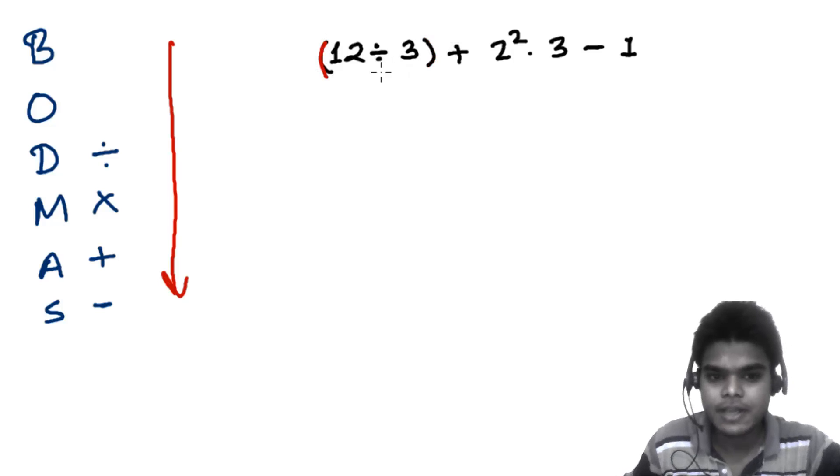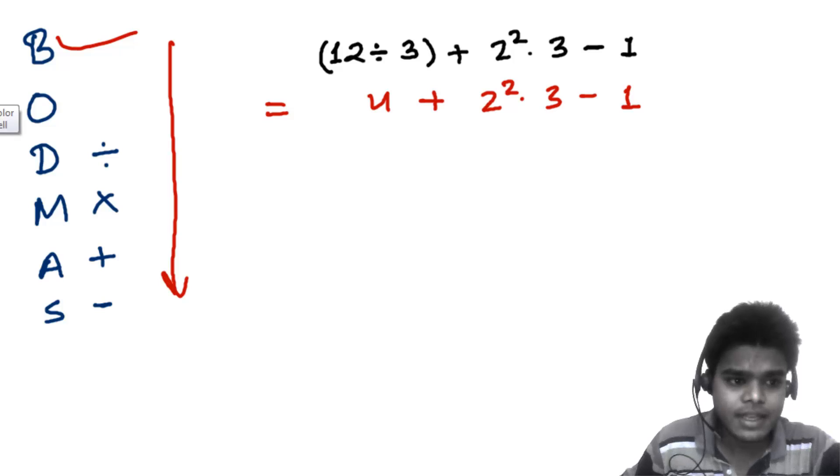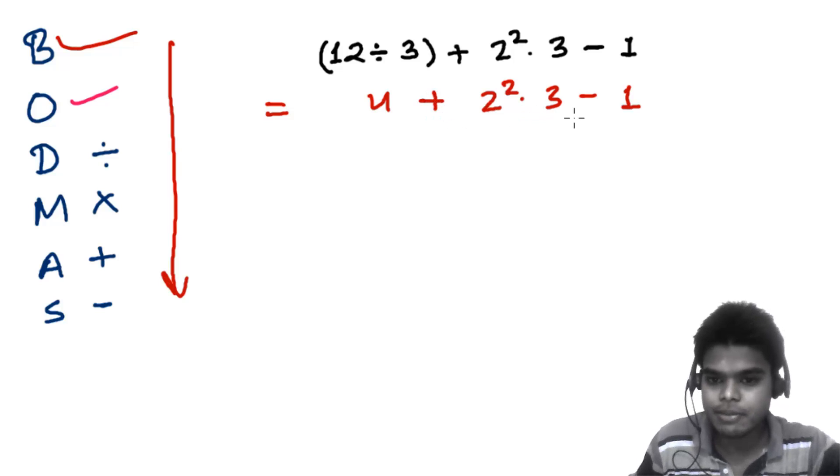Keeping this in mind, let's do it. First, we solve the bracket: 12 divided by 3 is 4, plus 2 squared times 3 minus 1. Our next step is others. We have addition, multiplication, subtraction, and squaring. First we do the square: 2 squared is 4, times 3 minus 1.